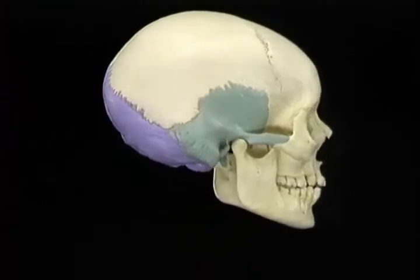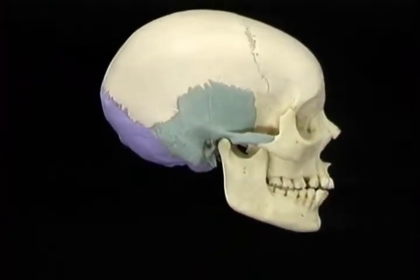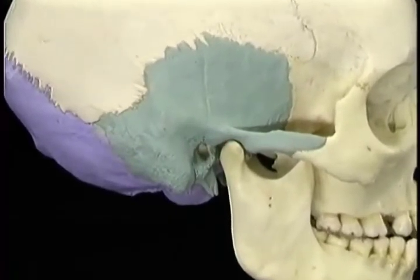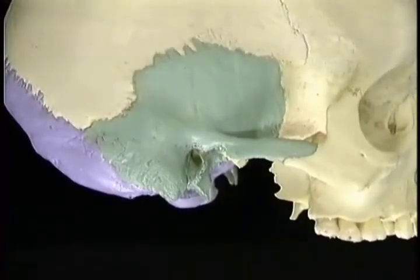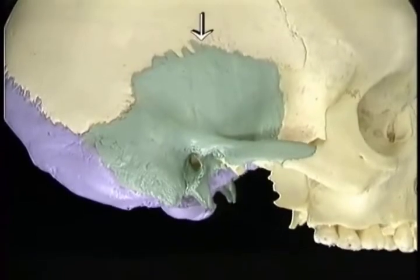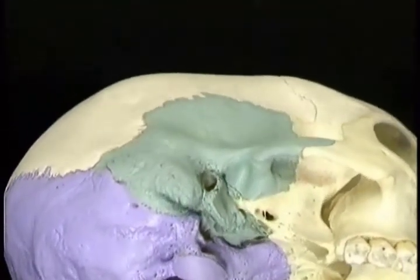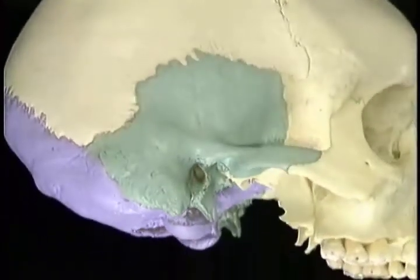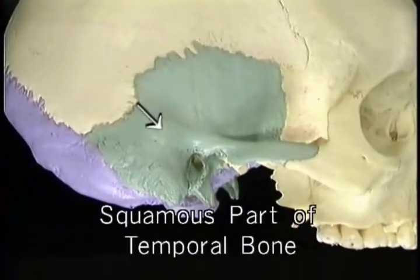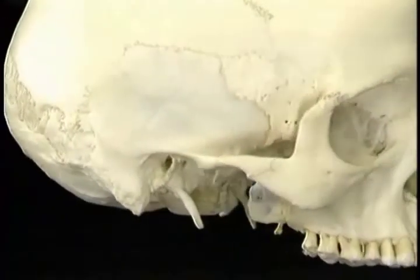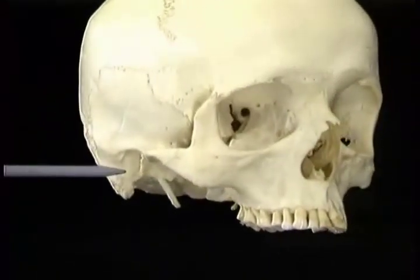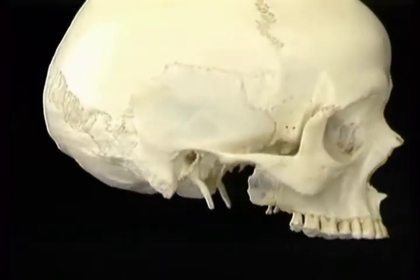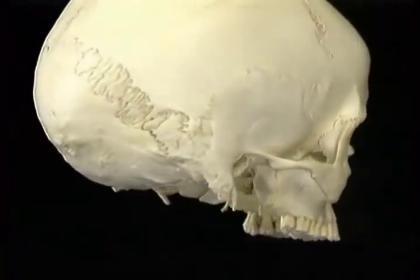Now that we've looked at the occipital bone, let's take a look at the temporal bone — it's quite a complicated bone. To see its full extent, we'll again remove the mandible. The temporal bone goes from the outside to underneath. This is the petrous part of the temporal bone, and this is the squamous part. A prominent feature of the temporal bone is this large projection, the mastoid process. As we'll see, it's the origin of some of the muscles that move the head, including the sternocleidomastoid.